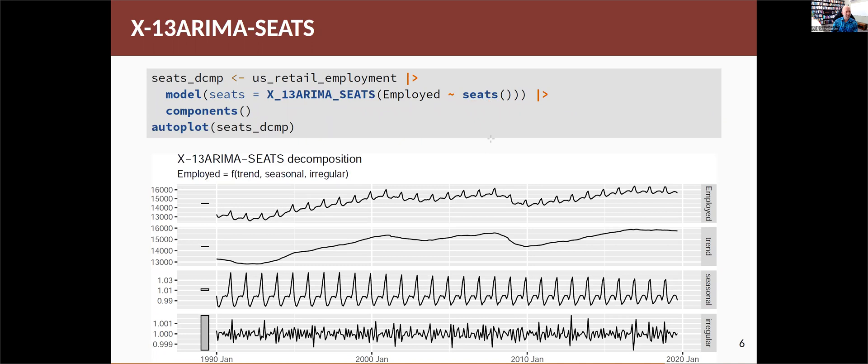If you look at the help files you'll see there's lots of variations that you can put in and lots of other arguments. But it comes back with a decomposition. It's also multiplicative. So you can see that the seasonal and the irregular are centered around one, which is what you'd expect from a multiplicative decomposition. Otherwise it's very similar to the results that you get from X11. In fact, for this particular series there's probably not a lot to pick between them.